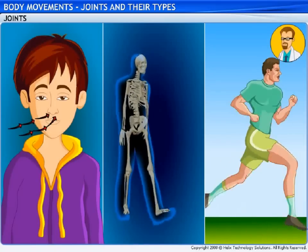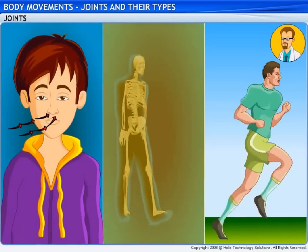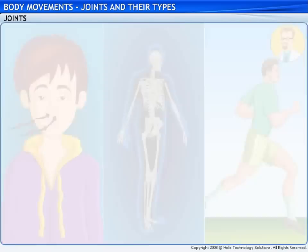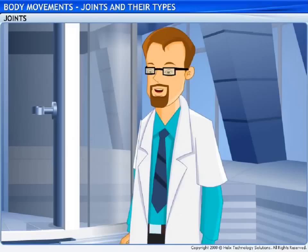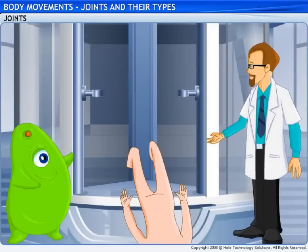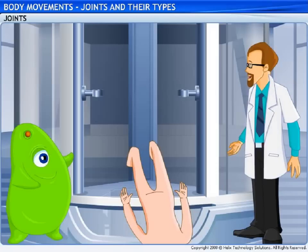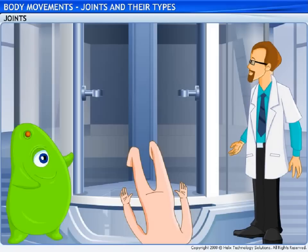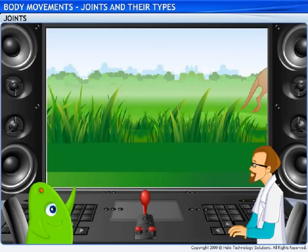Several movements take place in our bodies — right from blinking our eyes to breathing to walking and even running. We can bend different parts of our body because of joints. For instance, I can bend my arm because of this joint at the elbow. Your clone, on the other hand, just fell because it tried to bend its knees when there are no joints at the knees.